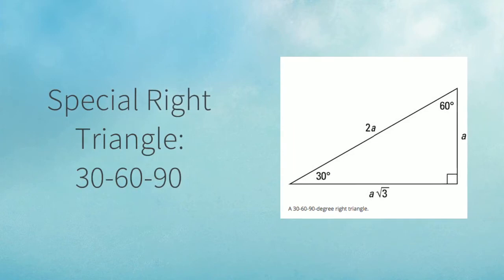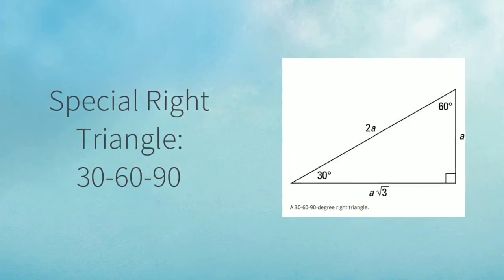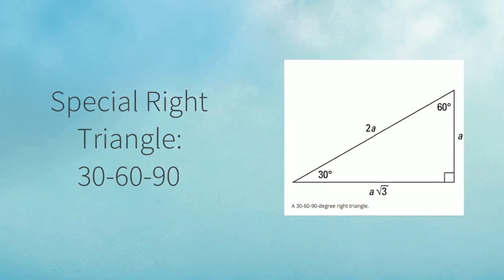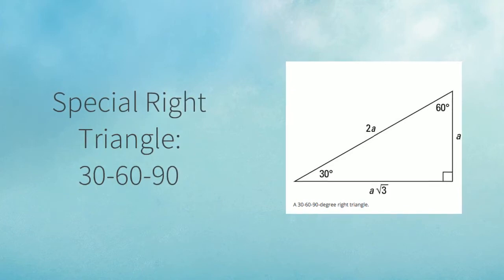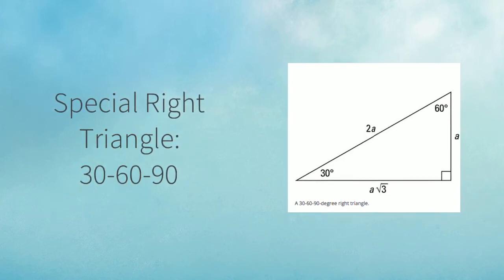The side length opposite to 30 degrees is a. The side length opposite to 60 degrees is always a root 3. And the side length opposite to 90 degrees is always twice the side length of a.